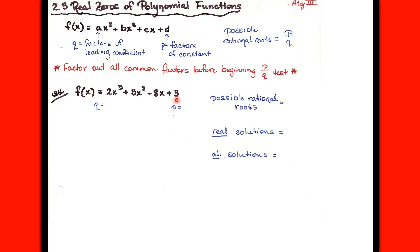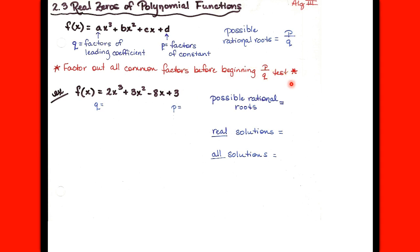So if you have integer coefficients and rational zeros of the function, you can find them by finding all of the factors of your constant — we call that p — and all of the factors of your leading coefficient — we call that q — and then put the p's over the q's. Something that will make this easier: be sure to factor out any common factors before doing p over q, because it gives fewer numbers to work with and eliminates answers that aren't possibilities.